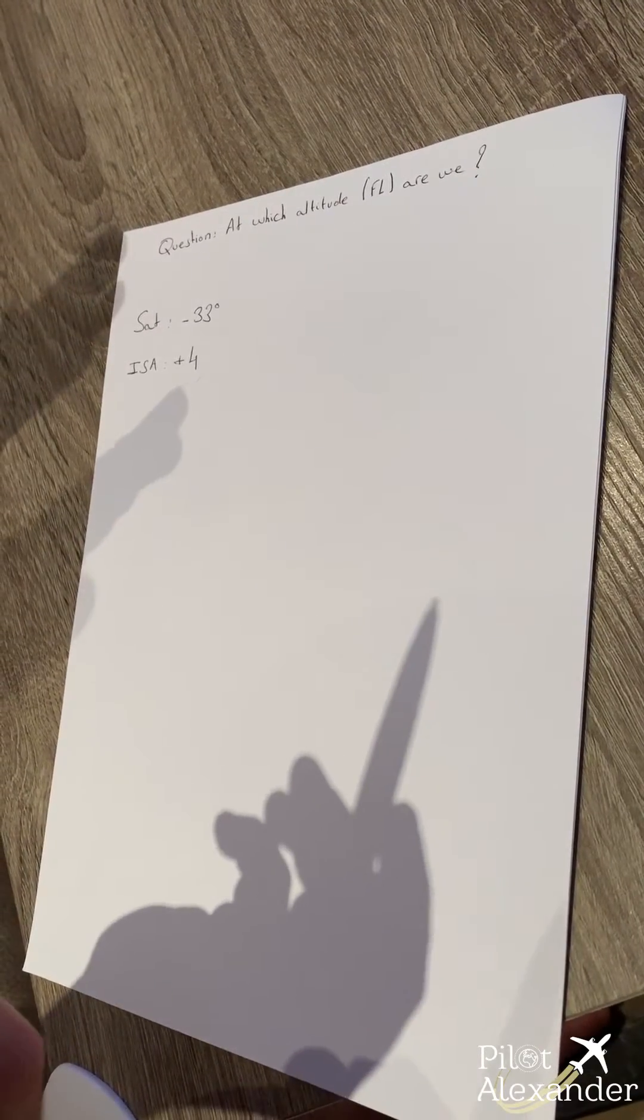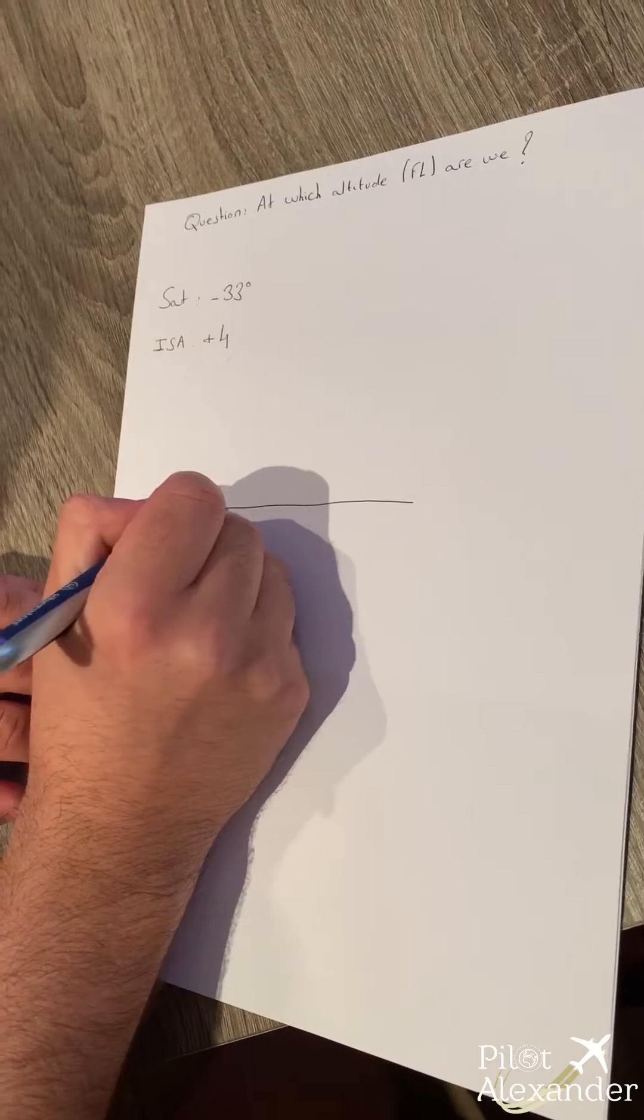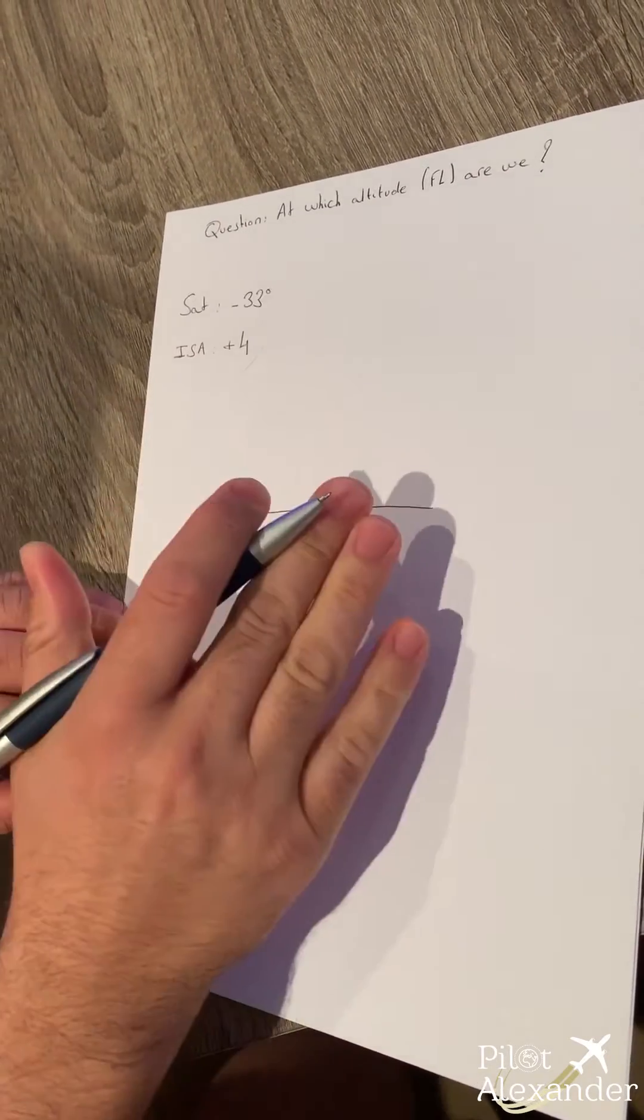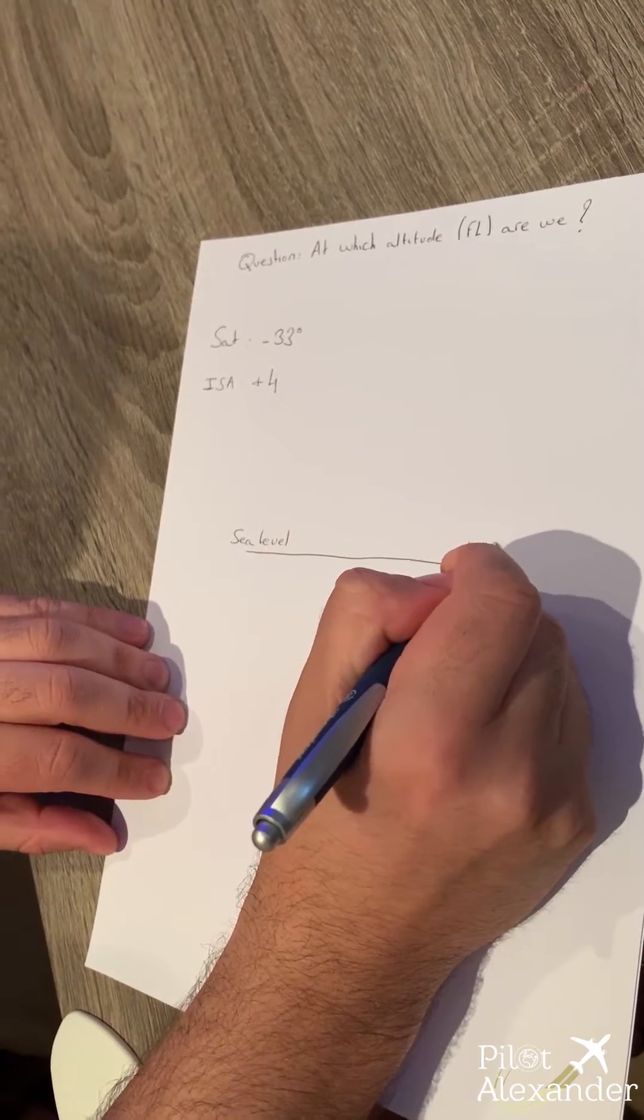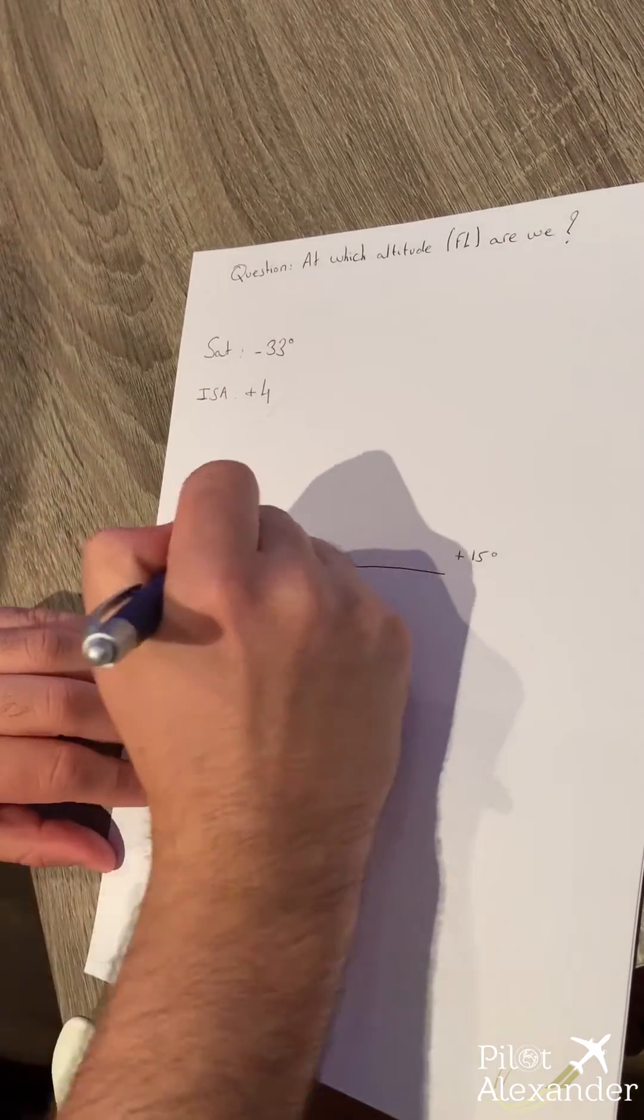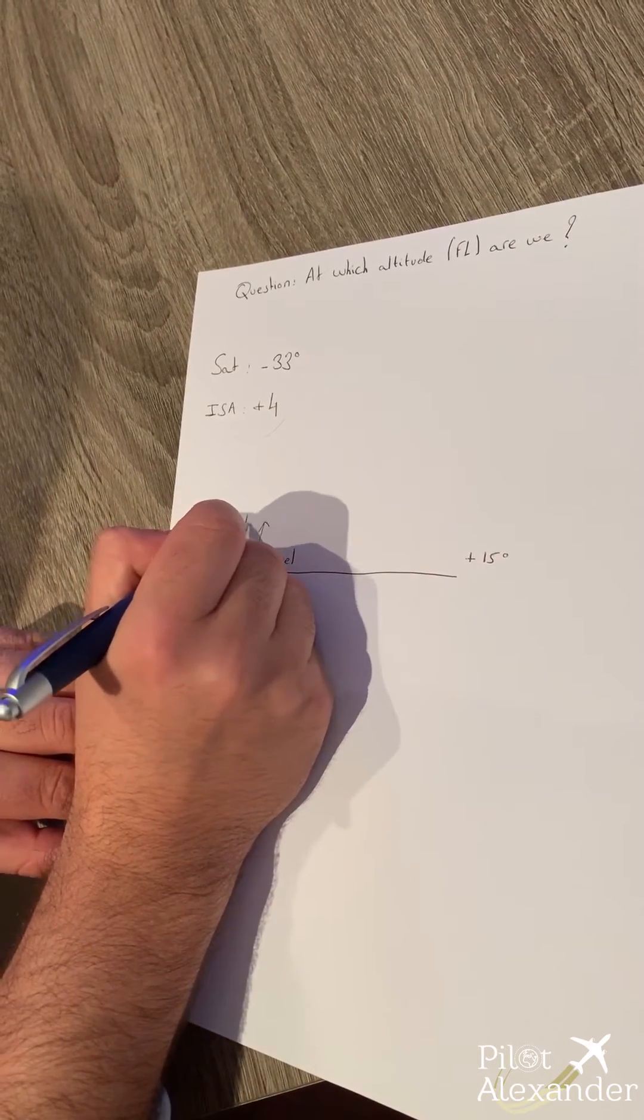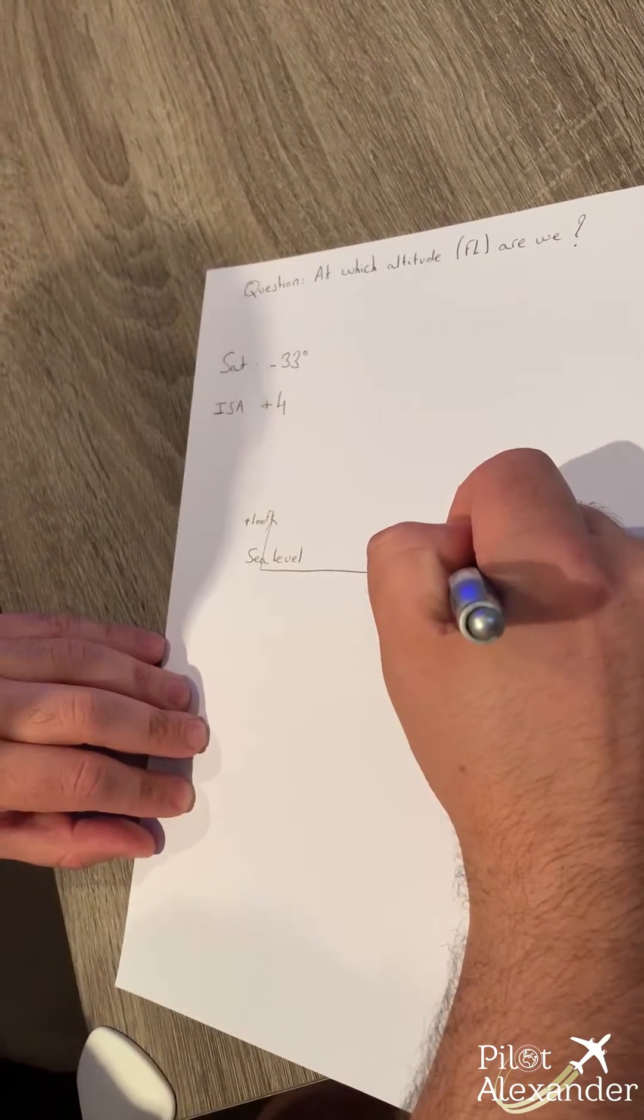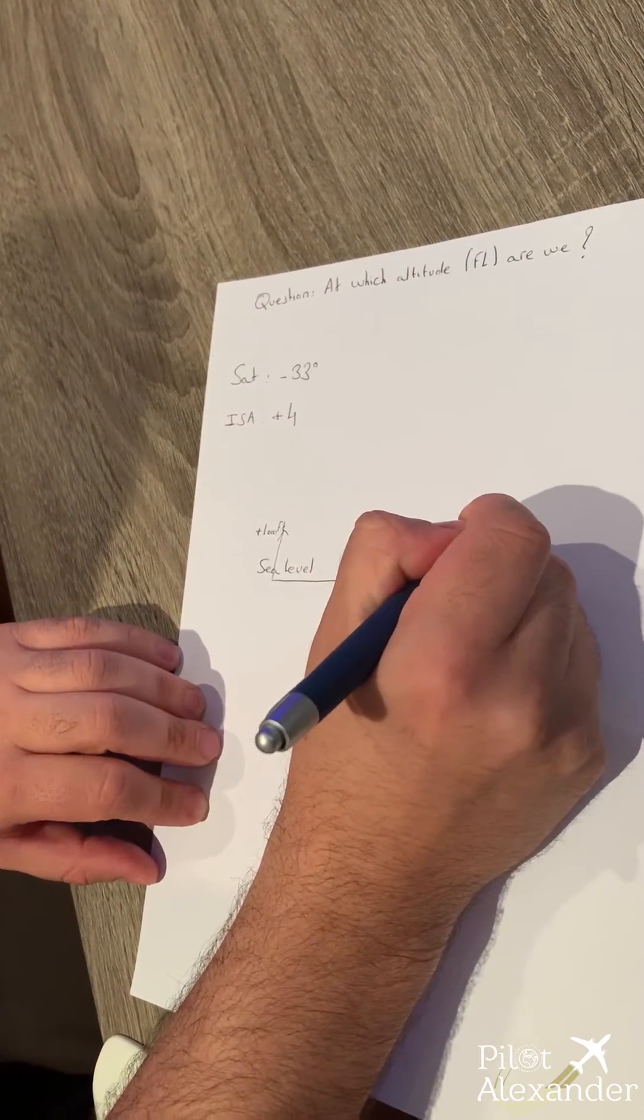So I will clarify it now. We know that at sea level, in ISA condition, the temperature is plus 15 degrees, correct? Now we climb every thousand feet, we decrease the temperature by minus two degrees Celsius.